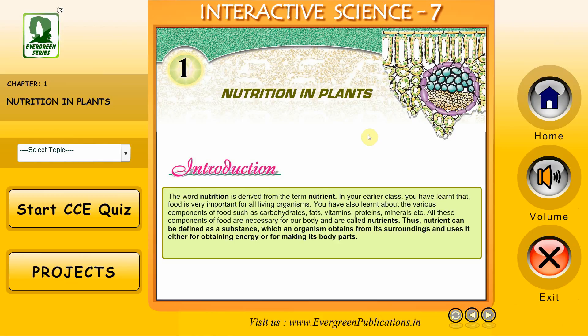Nutrition in Plants — Introduction. The word nutrition is derived from the term nutrient. In your earlier class, you have learnt that food is very important for all living organisms. You have also learnt about the various components of food such as carbohydrates, fats, vitamins, proteins, minerals, etc. All these components of food are necessary for our body and are called nutrients. Thus, a nutrient can be defined as a substance which an organism obtains from its surroundings and uses it either for obtaining energy or for making its body parts.